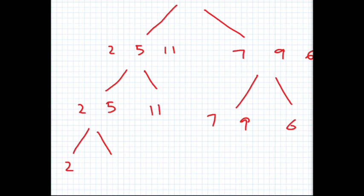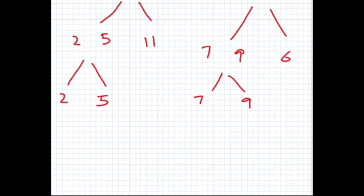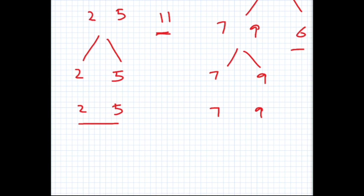Since the individual elements are sorted on their own, this is the splitting part. Now we do the opposite — merging. Two and five are already sorted so we write them as is. Seven and nine are already sorted so we write them as is. Now we have to compare 11 and 6, and write them in proper order: 2, 5, 11. Then 6, 7, and 9 have to be written in proper order.